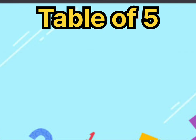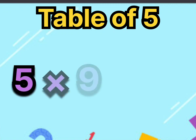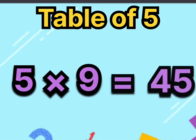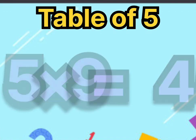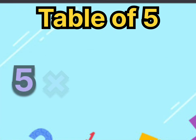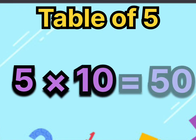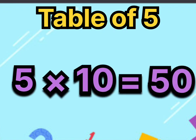Five nines are forty-five. Say it again, five nines are forty-five. Five tens are fifty. Say it again, five tens are fifty.